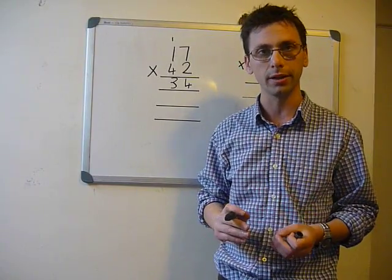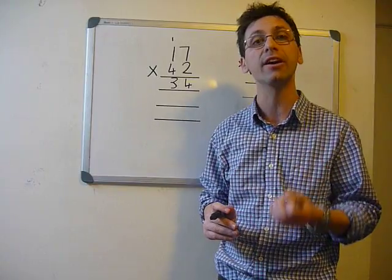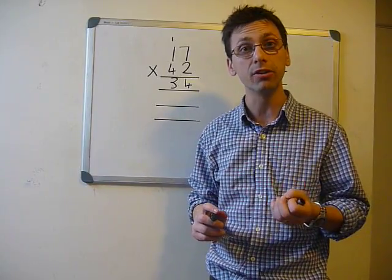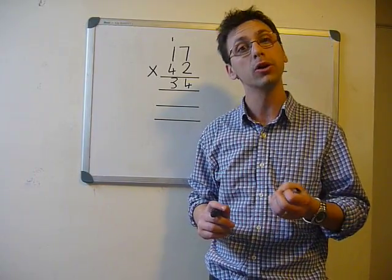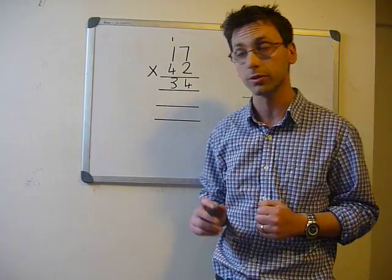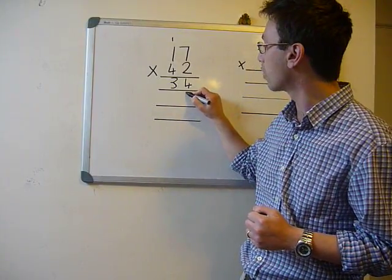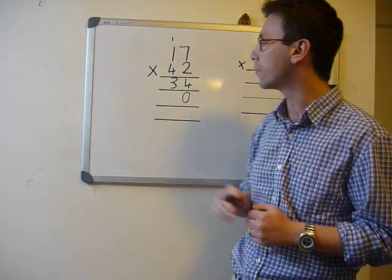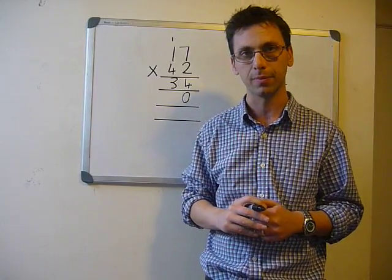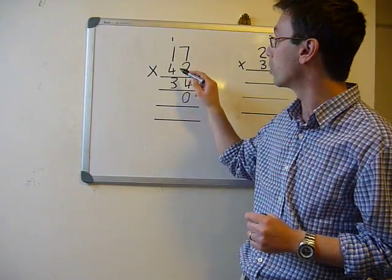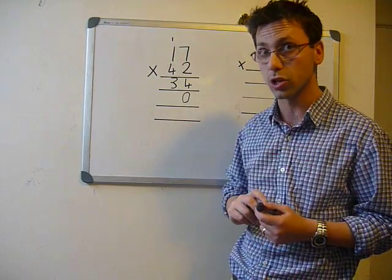In our next line, we have to carry the 0. This 0 is very important because it represents place value. You place the 0 underneath the first number. Now we have to go to the tens column.